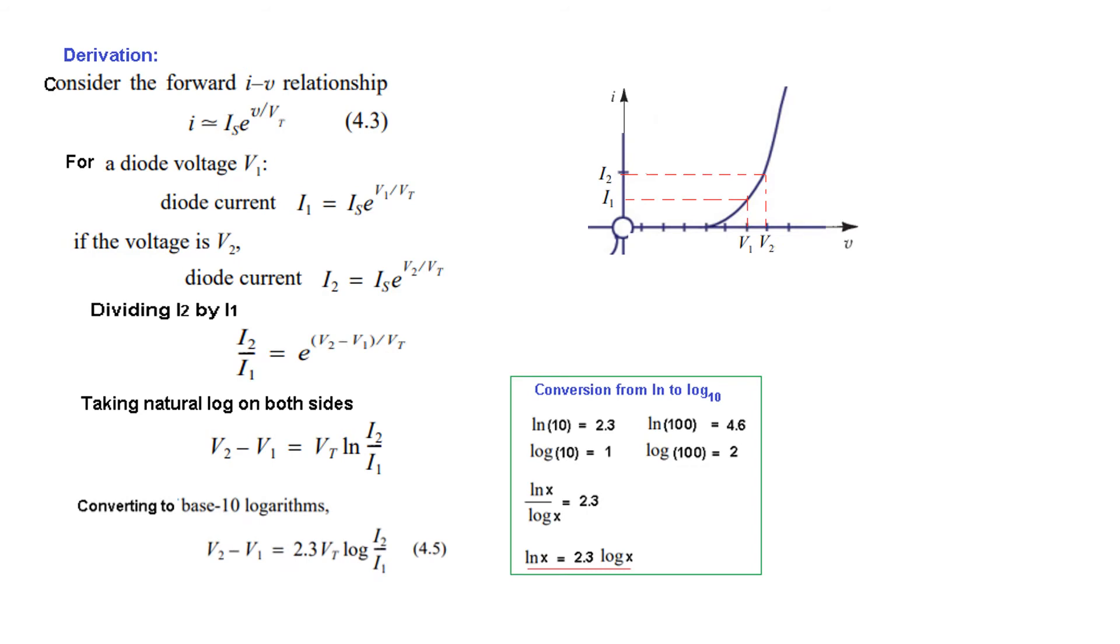Now we need to convert this into log base 10. And for that let us go through this. I have discussed this in my previous video as well. If we take log natural of 10 the value is 2.3. And log base 10 of 10 is 1. So the relation of the ratio between these two is 2.3.